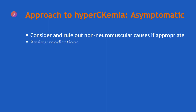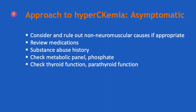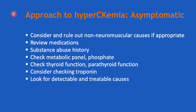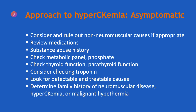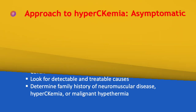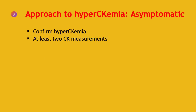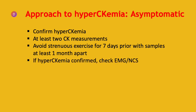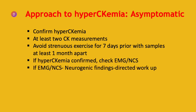In the approach to hyperCKemia in asymptomatic and pauci-symptomatic patients: consider all non-neuromuscular and non-myopathic causes of hyperCKemia that might explain the high CK level, including reviewing medications, substance abuse history, checking metabolic panel and phosphate level, thyroid function tests, parathyroid function tests, and troponin level. Look for detectable and treatable causes, and determine any family history of neuromuscular disease, hyperCKemia, or malignant hyperthermia. Before embarking on expensive investigations, confirm hyperCKemia by a repeat assay at least one month apart, and avoid strenuous exercise for seven days prior to sampling.